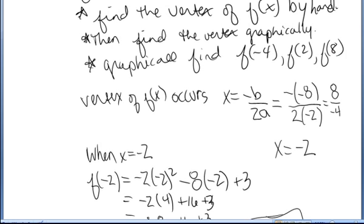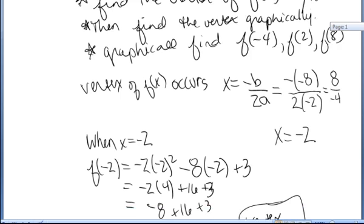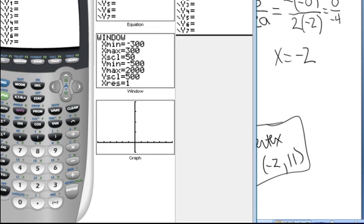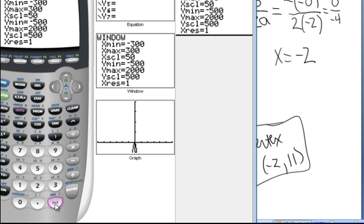The second part of the problem asks us to identify the vertex graphically. Meaning I'm going to go to my graphing calculator and enter the function. Use the graph of the function to identify the vertex. So in the graphing calculator, I'm going to first go to the y equals menu and put the function in. Now according to my own calculations by hand, the vertex occurred at negative 2 comma 11. I want to create a window that allows me to see at least that point. I'm going to go ahead and use a window from negative 10 up to 10 on the x's with tick marks every one unit.